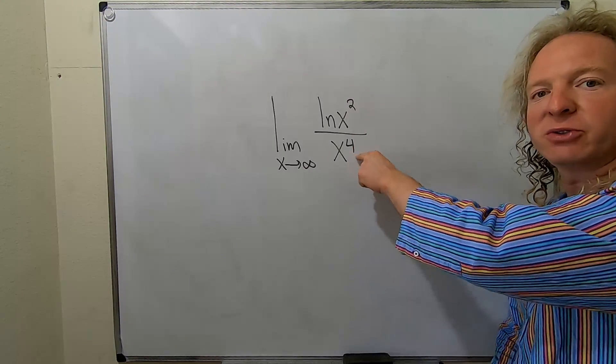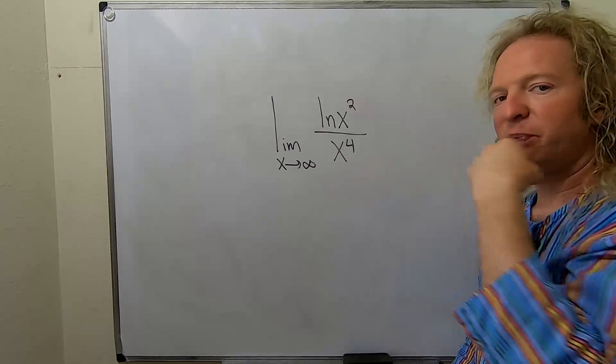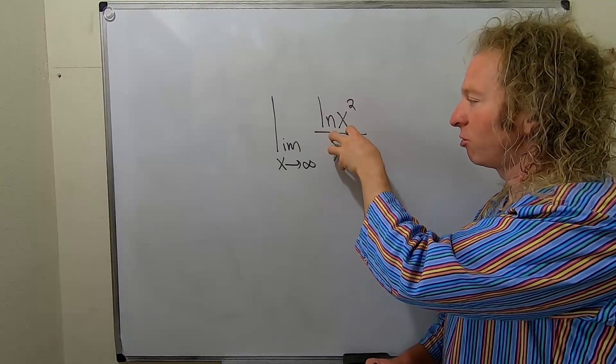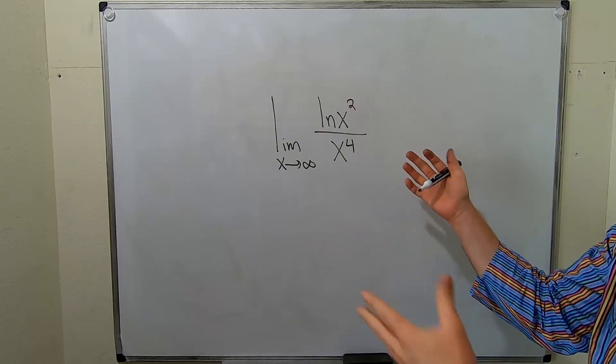Polynomials grow faster than logs. So as x gets really big, in the long run the bottom will grow faster than the top. So this limit should be zero. You could just put zero when zero is the answer.